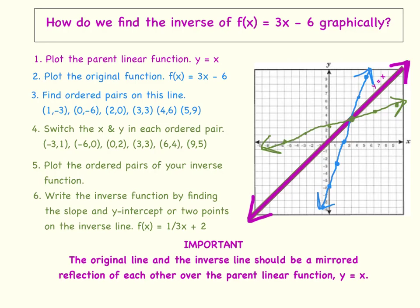Now we will find the ordered pairs on this line. First, we have 0, negative 6, and then 1, negative 3, 2, 0, 3, 3, 4, 6, and 5, 9.